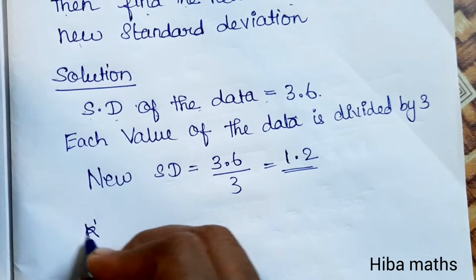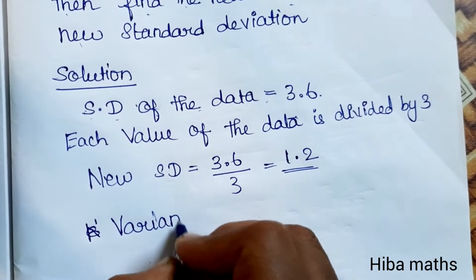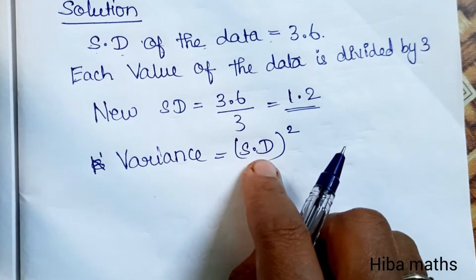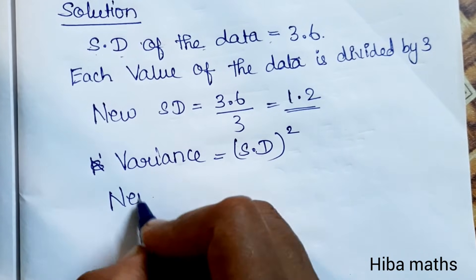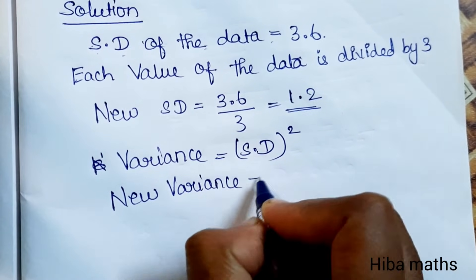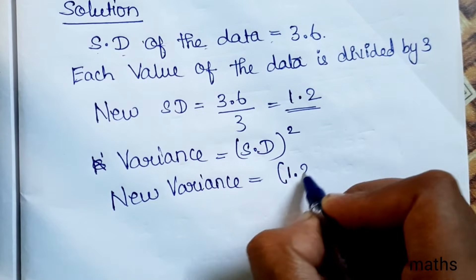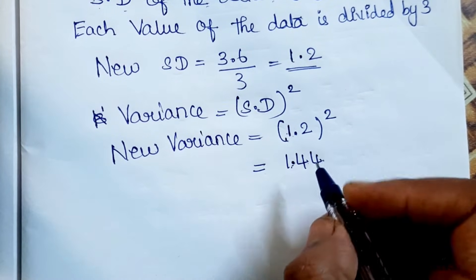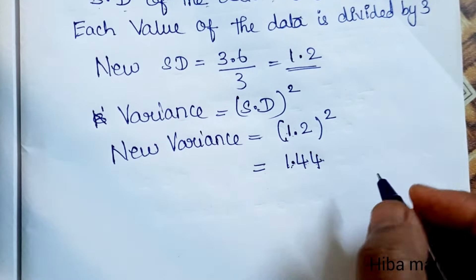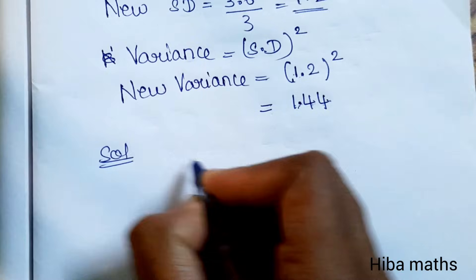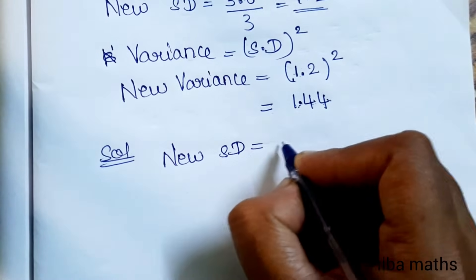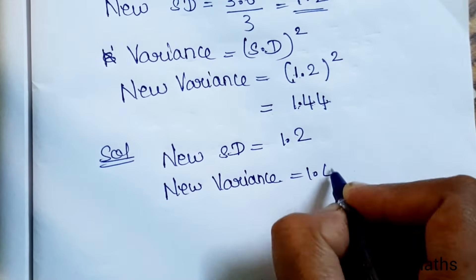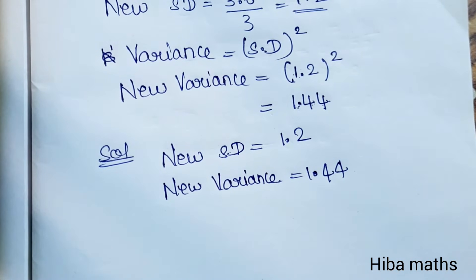The variance is equal to the standard deviation squared. So the new variance equals (1.2) squared. 1.2 squared equals 1.44. Therefore, the new variance is 1.44 and the new standard deviation is 1.2.